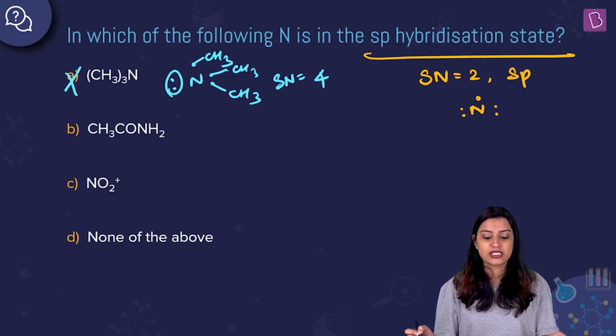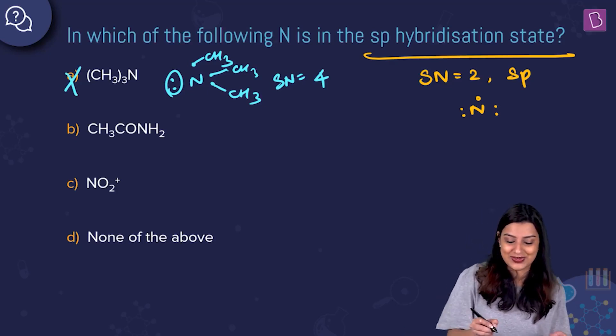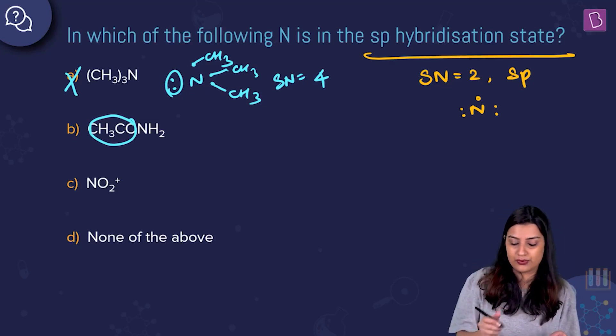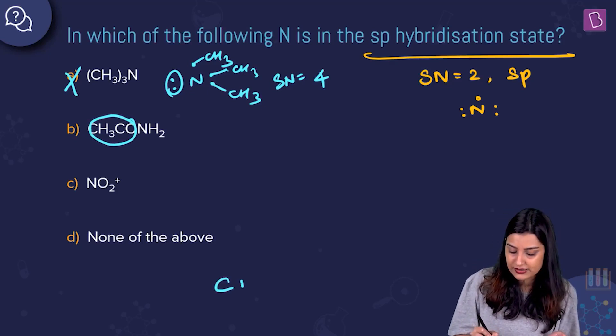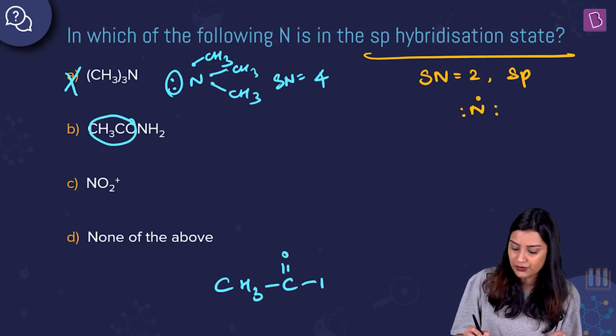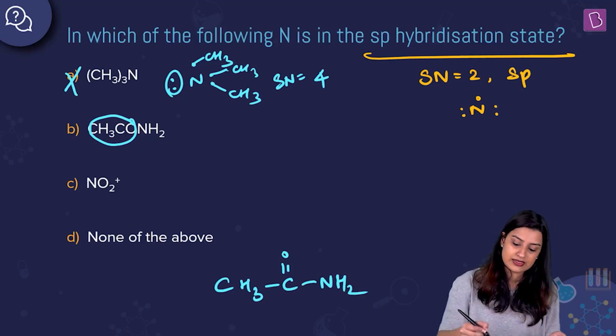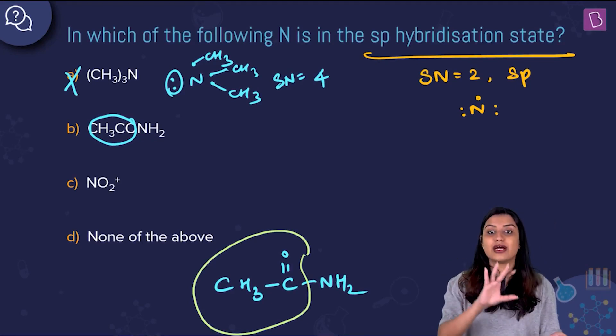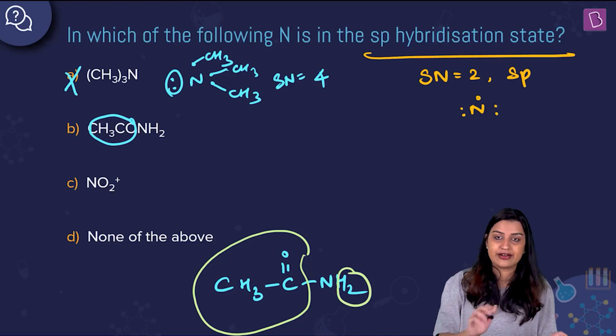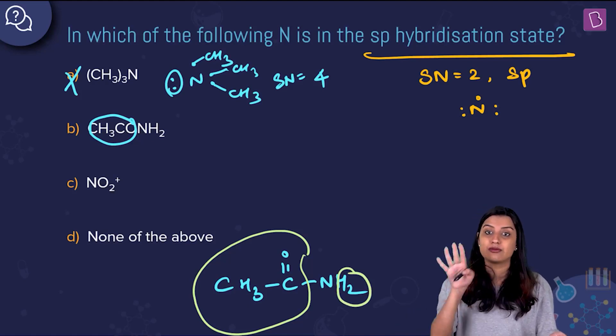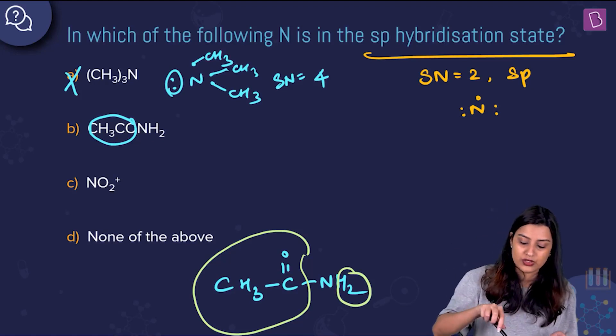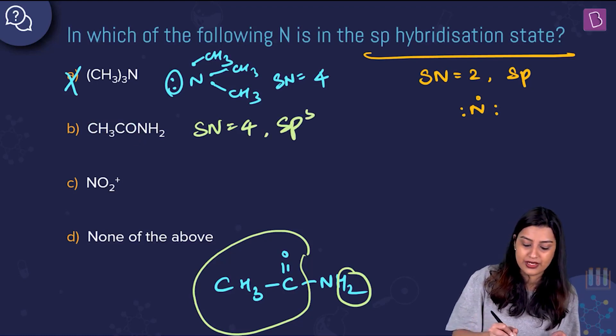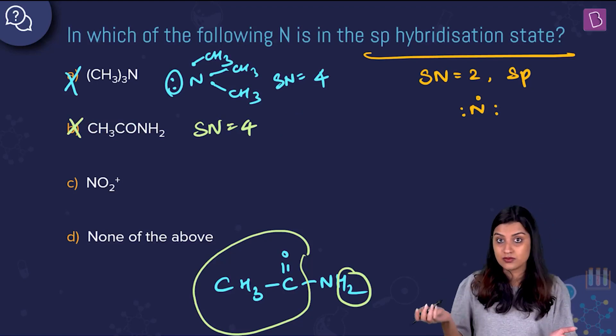Option B is CH3CONH2, acetamide. Acetamide has a structure with C double bond O, NH2. The entire CH3CO group is one entity with respect to nitrogen, and then you have two different hydrogen atoms. You still have only three groups bonded to nitrogen and one lone pair, which means steric number is equal to 4. It will be sp3 hybridized, not sp. Not an answer.